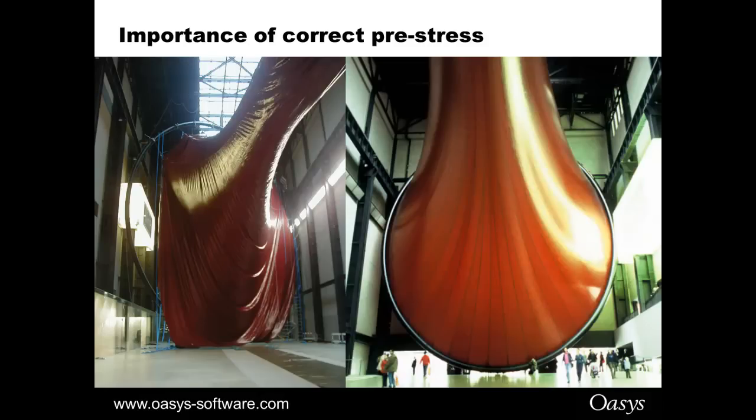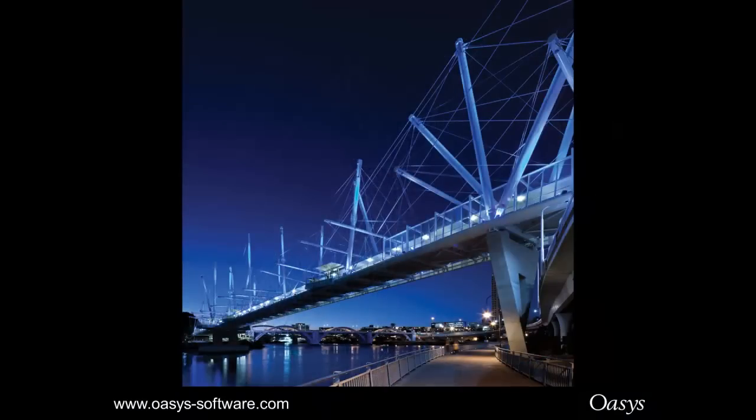Form finding can also be used for cable nets. This is a tensegrity structure, this is the Kurilpa Bridge down in Brisbane. Due to constraints on the construction the bridge had to be built in double cantilever form and the two parts of the bridge would meet in the middle. The cables were fixed length, there was no option for adjustment, there were no turnbuckles and GSA form finding was used to determine the unloaded cable lengths so the end result was that the two parts of the bridge did actually meet in the middle. It was obviously used then for the subsequent static and dynamic analyses on there as well.